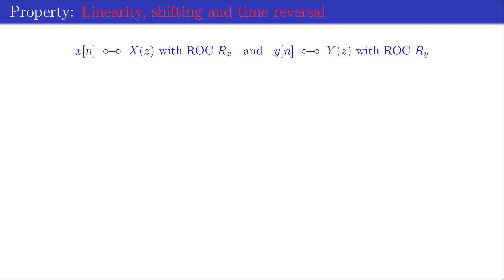Just as the DTFT, there are a number of important and very useful z-transform properties. Assume the z-transform of the sequence x[n] and y[n] are given by X(z) and Y(z), respectively, and their regions of convergence by R_x and R_y.